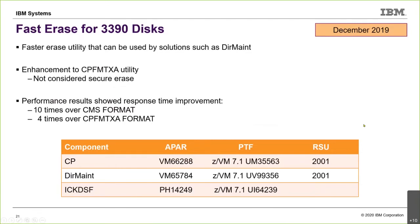Another item: fast erase for 3390 ECKD-type technology. This is a change that can be exploited by things such as DIRMAINT to speed up formatting and erasing of data, providing a pretty significant performance improvement.